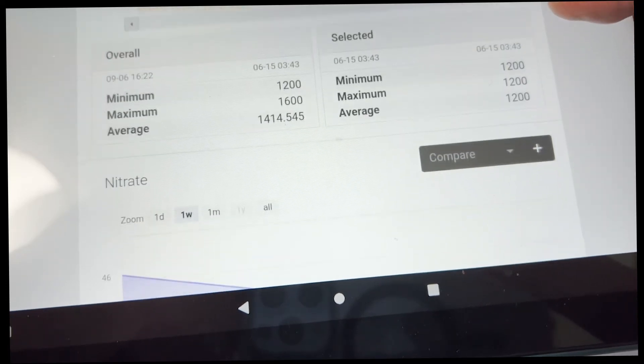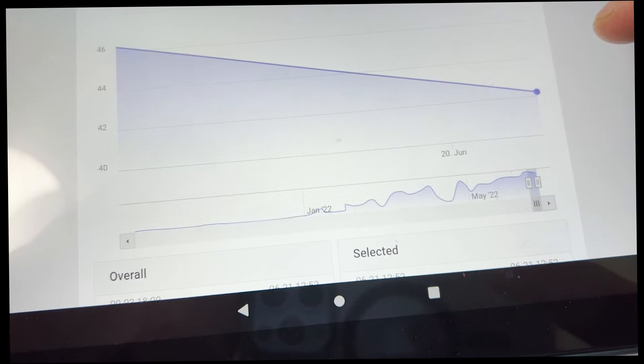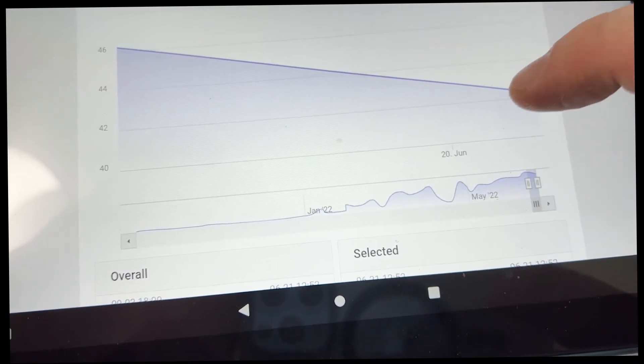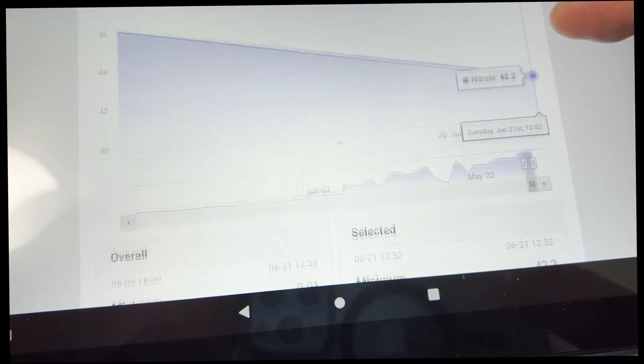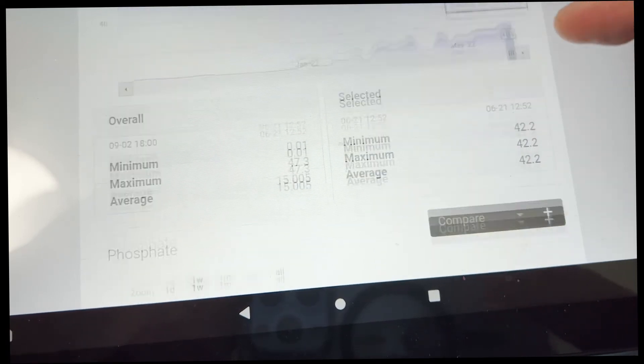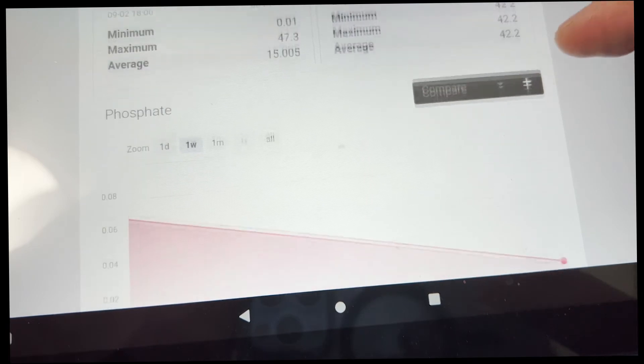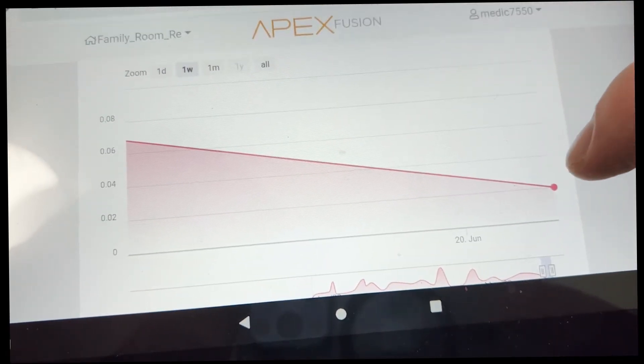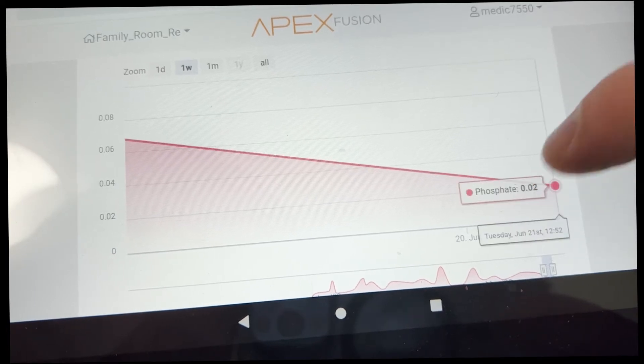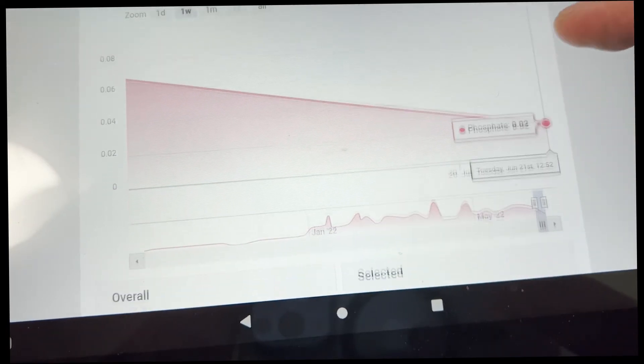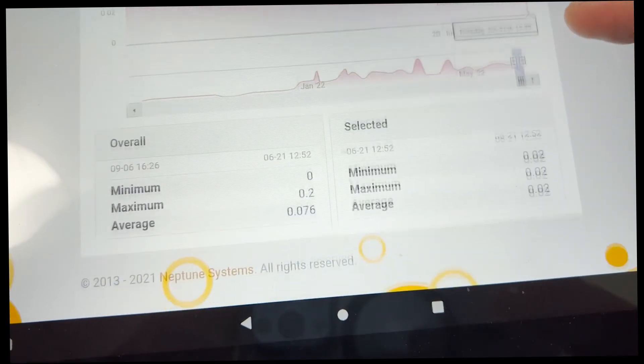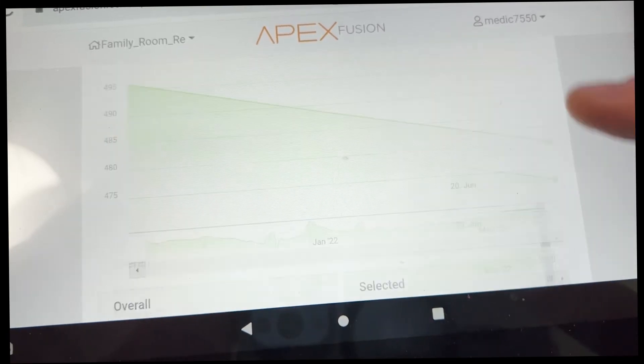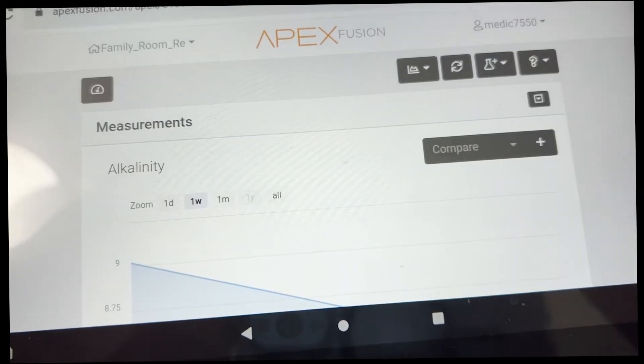Nitrate was 42.2, down from 47.3. Our phosphate has plummeted to 0.02. We don't want to bottom phosphate out, so I may start dosing some phosphate. If we get out of ratio, we can have really bad algae issues like dinos, and I don't feel like fighting dinos again. We're going to keep a close eye on that.